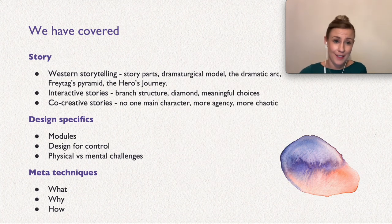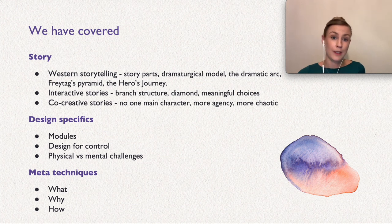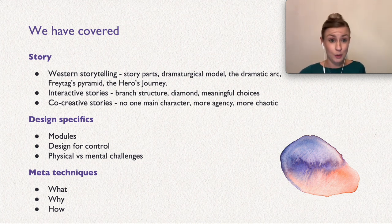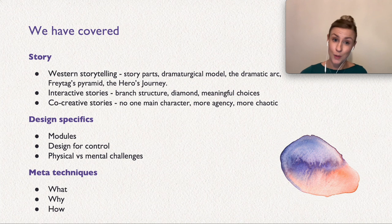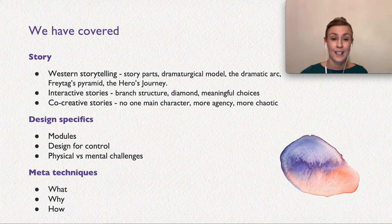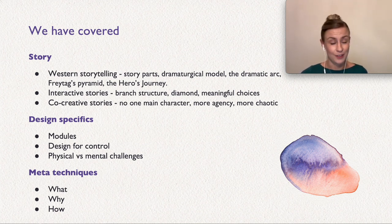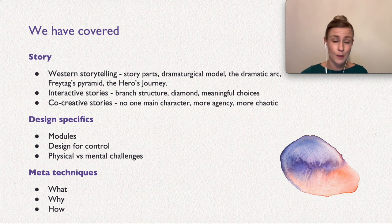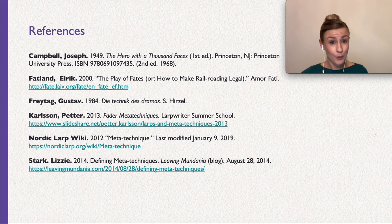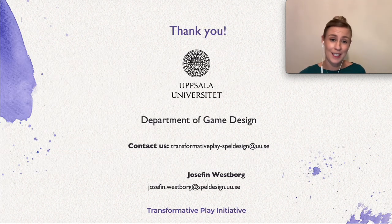So we have now covered the main topics of this video. We started out with some western storytelling — the different parts of a story, the dramaturgical model, the dramatic arc, Freytag's pyramid, and the hero's journey. Then we talked about interactive stories: branch structure, the diamond, and meaningful choices. Then we went into co-creative stories, talking about not having a main character, having more agency, and that it can be a bit more chaotic. In the design-specific parts we talked about modules, designing for control, and physical versus mental challenges. And in this last part we talked about metatechniques — what they are, why we do them, and how to do them. So this was all for this video. Thank you for listening and I hope you enjoyed it.